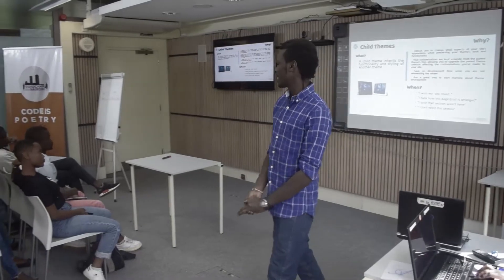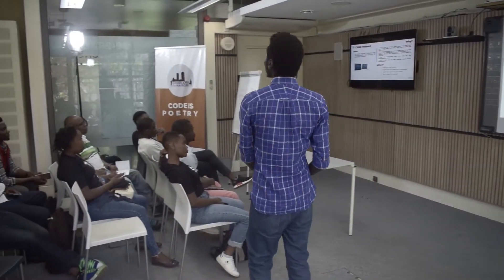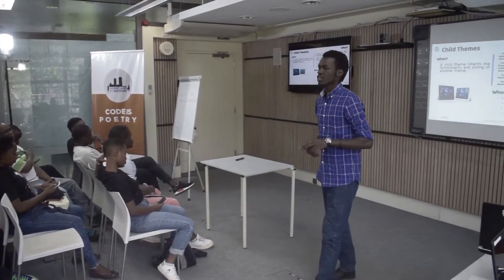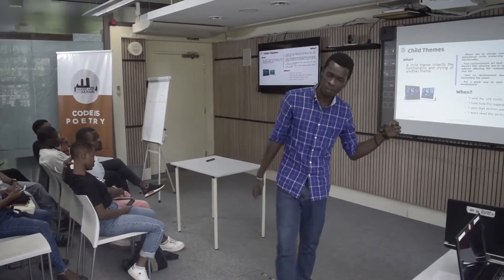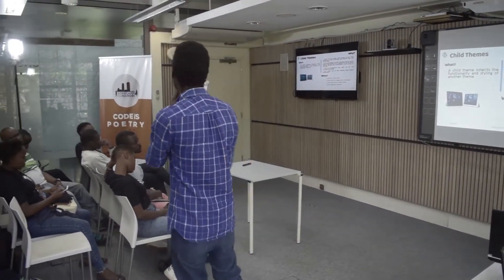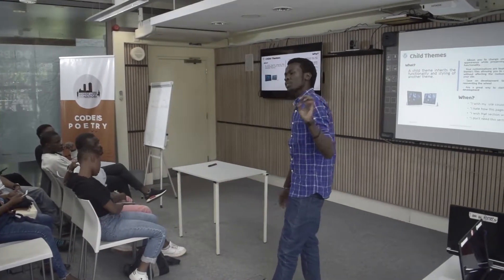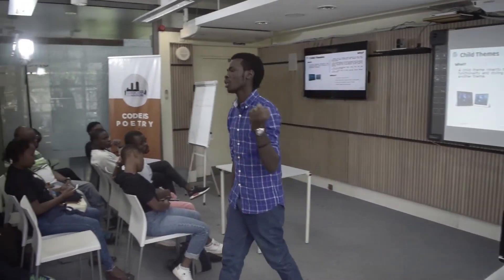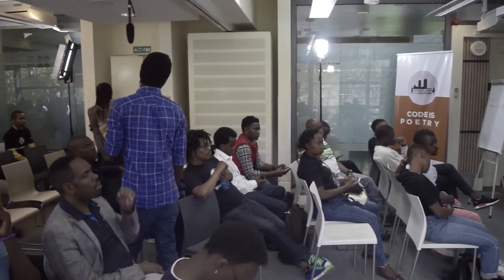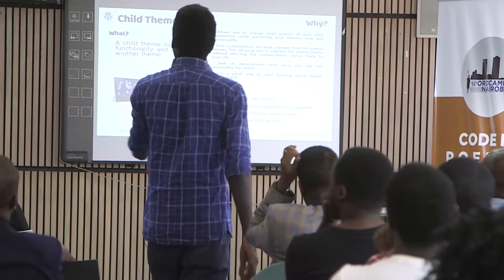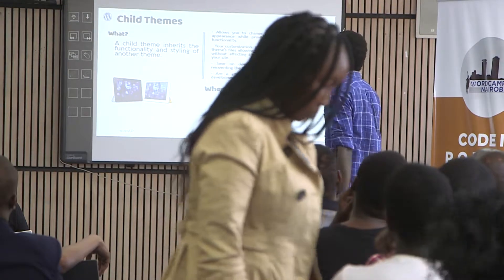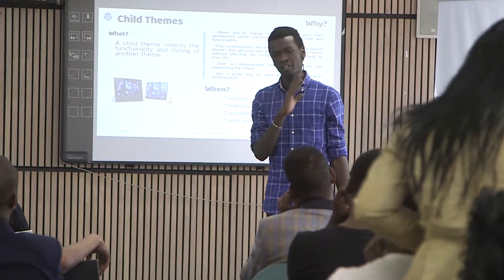Child themes, the main topic of the day. A child theme is like a mirror of the theme you decide to install on your WordPress. So let's say you want to go with the WordPress 2017 theme on your website. A child theme allows you to change some aspect of your site's appearance while preserving the look and functionality of your theme.